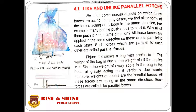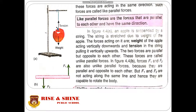In picture A, an apple is hanging by a string. The weight of the apple acts downward while the tension in the string acts upward, opposite to the weight. These two forces are parallel to each other but in opposite directions, so they are called unlike parallel forces. In figure B, forces F1 and F2 act on a rod — F1 acts upward at one end and F2 acts downward at the other end, so these are unlike parallel forces.